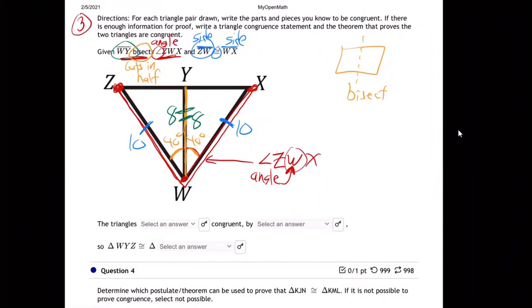That WY, it's a part of both triangles. It's obviously the same as itself, whatever it is. Let's say it's eight. Then that proves we have another side in both triangles. It's the same. So now we have enough information, don't we? Do you see it? Do you see how that is enough information now?